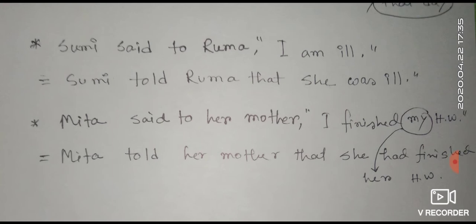Next example: 'Shumi said to Ruma, I am ill.' In indirect speech it will be 'Shumi told Ruma that she was ill.' Here 'I' will follow Shumi, so we use 'she.' The verb 'am ill' is present indefinite tense, so it becomes past indefinite tense: 'was ill.' So the change is: Shumi told Ruma that she was ill.